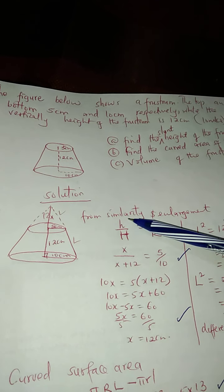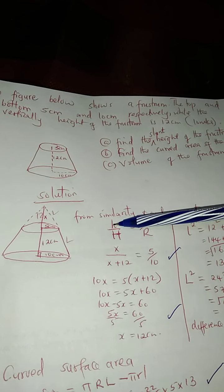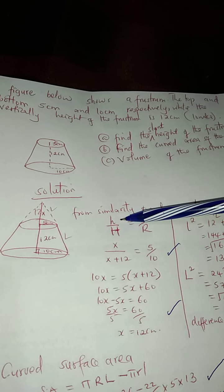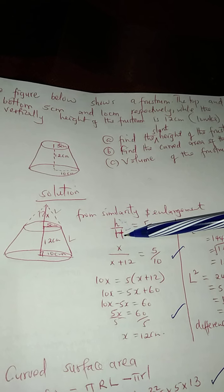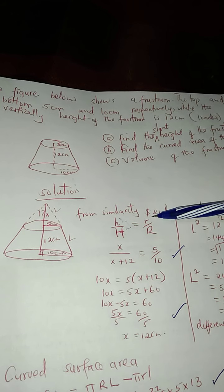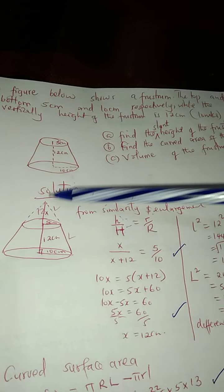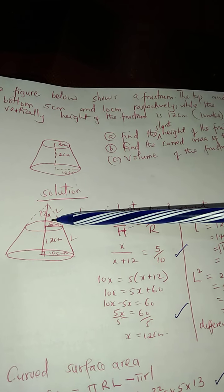From the topic of similarity and enlargement in form 2, we normally say that corresponding height over the corresponding smaller height over bigger height must always be equivalent to corresponding radius, smaller radius over bigger radius. So I will put from here, let the height that was removed be x.